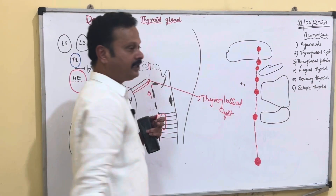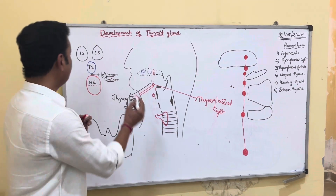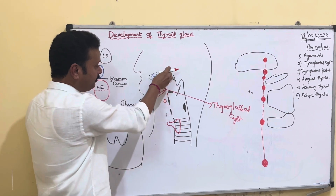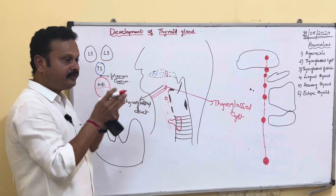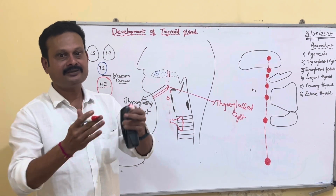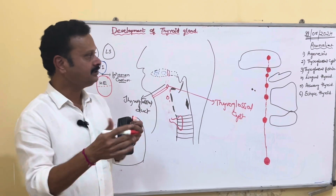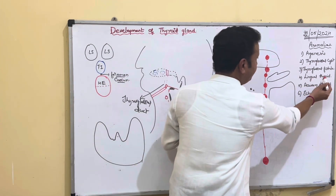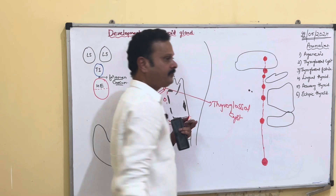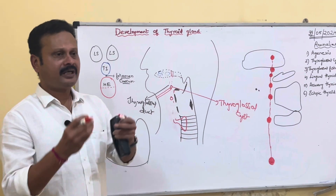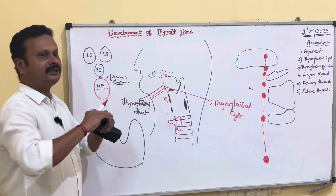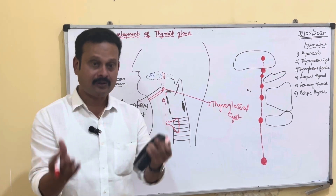The fourth anomaly is lingual thyroid. When the thyroglossal duct, instead of descending downwards, proliferates within the substance of the tongue, it gives rise to a thyroid gland within the tongue — hence called lingual thyroid. Next is accessory thyroid: sometimes within the vicinity of the thyroid gland, some accessory thyroid tissue may be noted.